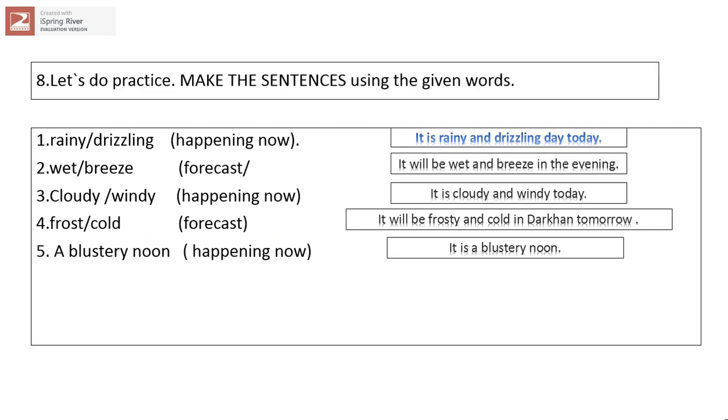Let's do practice. Make sentence using the given words. Number one: rainy, drizzling, happening now. It is rainy and drizzling day today. Number two: wet, breeze, forecast. It will be wet and breeze in the evening. Number three: cloudy, windy, happening now. It is cloudy and windy today. Number four: frost, cold, forecast. It will be frosty and cold in the time. Number five: a blusty noon, happening now. We have to think this, happening now or forecast out of the weather.